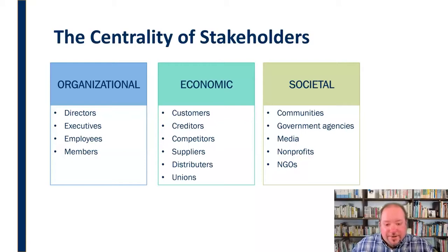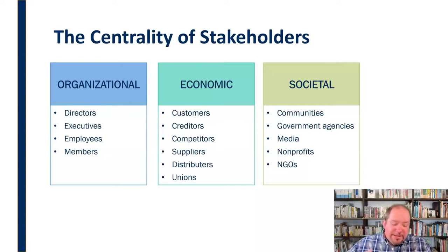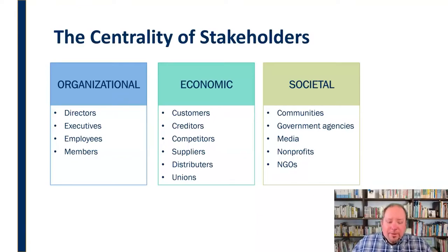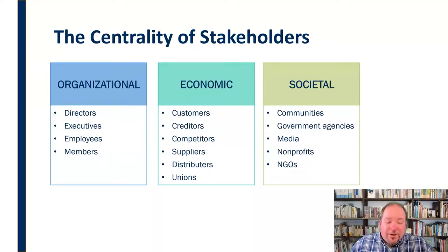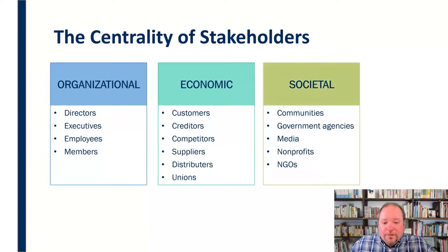We have to be concerned with all these different kinds of stakeholders — organizational, economic, and societal — because they're all impacted by what we're doing, and we are conversely impacted by what they are doing. This is an open system, not just closed off where we only affect ourselves. Almost every organization has this open system where it's affected by things going on outside it and also has an impact on things outside of it.